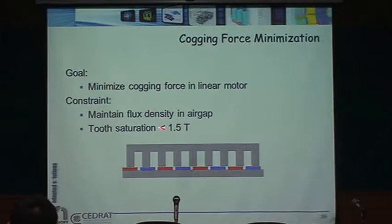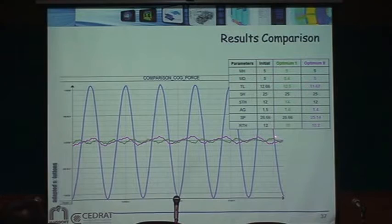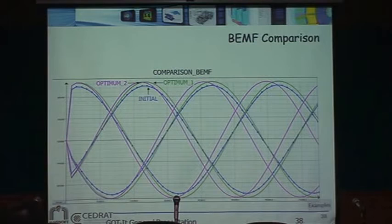Cogging force minimization for a linear actuator: we minimize the cogging force as the actuator moves, while keeping saturation below a limit and maintaining the same flux density. The parameters are tooth width, tooth spacing, and slot width. The optimizer found two different optima, and you can see the optimized force waveform compared to the initial.